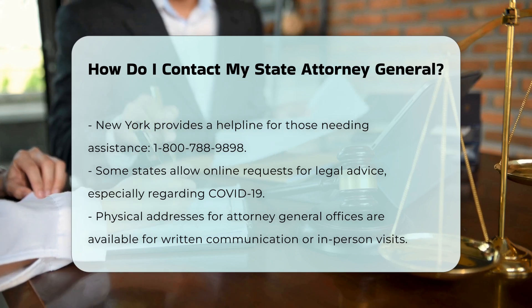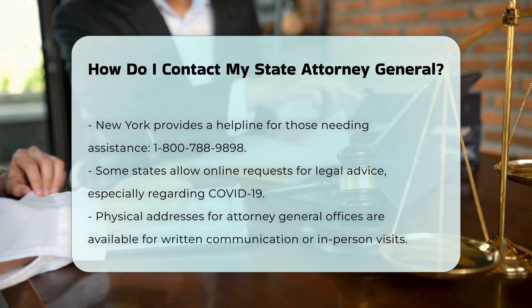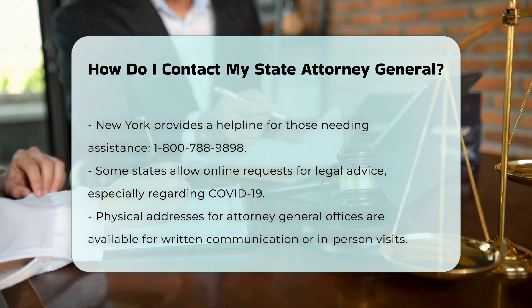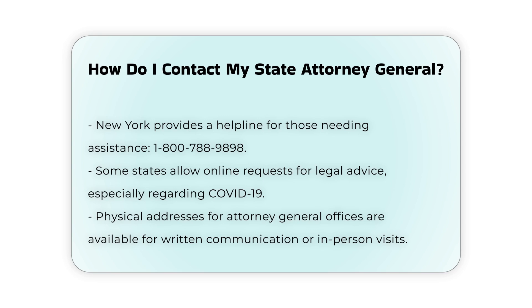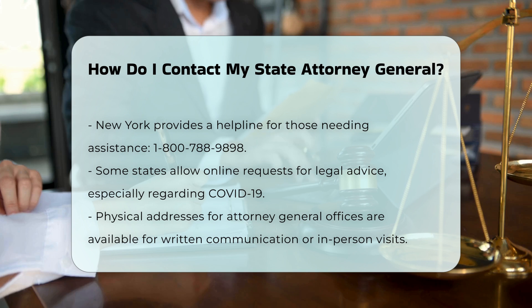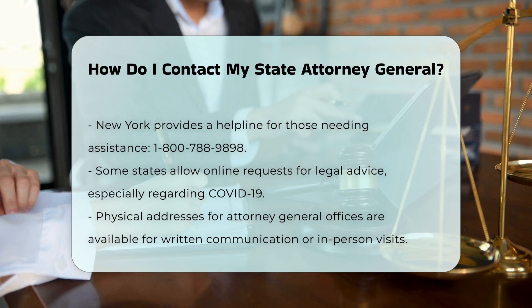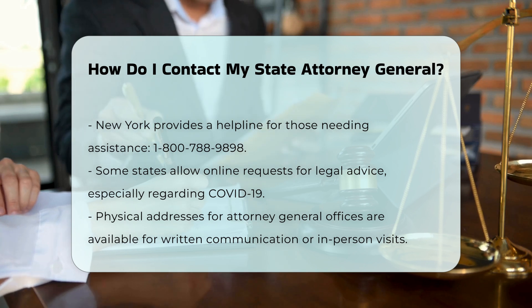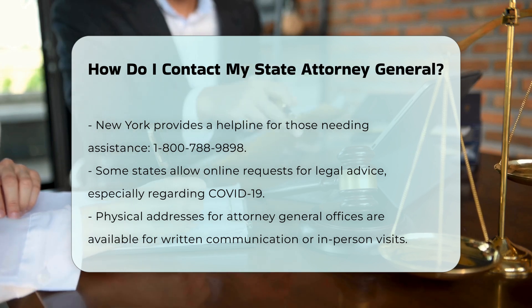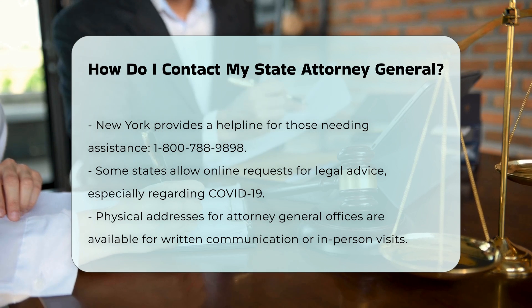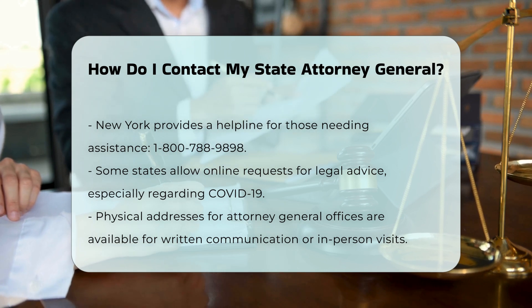Office addresses. If you prefer to contact the office in writing or need to visit in person, you can find the physical address of the Attorney General's office. For example, the Office of the New York State Attorney General is located at the Capitol, Albany, NY 12224-0341.